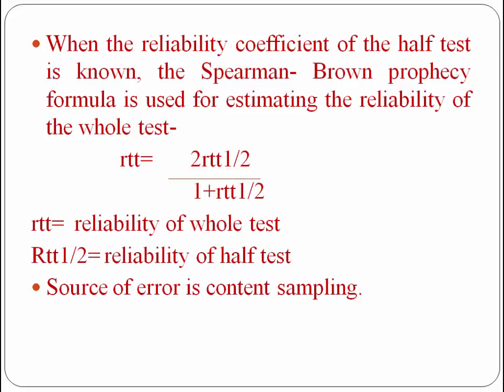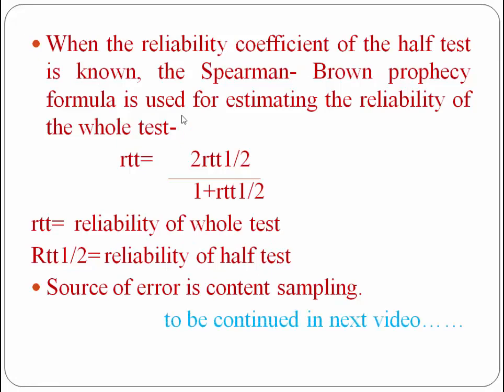Content sampling introduces error because when we divide the same test into two halves, the items in one half will differ from the items in the other half, so the content can vary and error will be created by content sampling. That is enough for this video; we will discuss more in the next video. Thank you so much for watching.